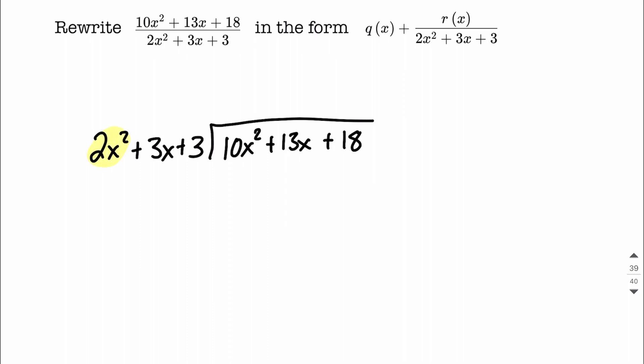So we're going to focus right here on this 2x squared, and the very first term on the inside there, the 10x squared. So to get started, you say to yourself, 2x squared multiplied by what makes exactly 10x squared? I think in this case it's going to be 5.